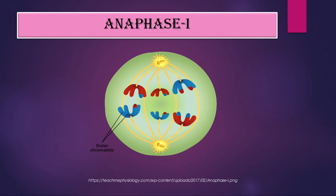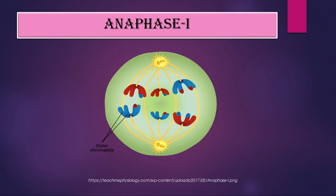A key point: after crossing over, the chromosomes are mixed (blue and red segments). During anaphase 1, they do not necessarily move as all-blue or all-red groups — any combination of the mixed chromosomes can move toward either pole. This random assortment creates a second source of variation, in addition to crossing over, as the chromosomes arrange at the equatorial plate and move toward daughter cells.